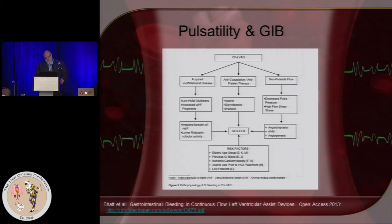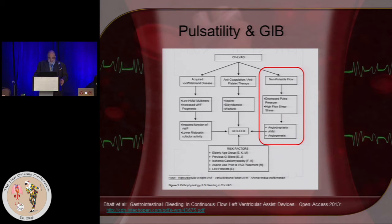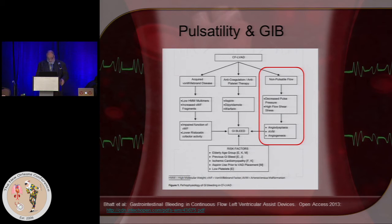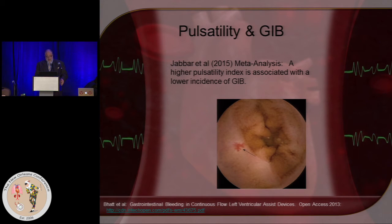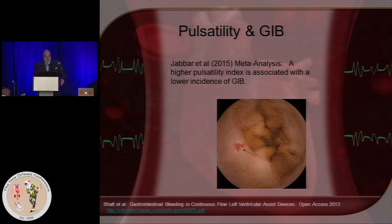The causes of GI bleeding include on the non-pulsatile flow side: decreased pulse pressure, high flow shear stress, angiodysplasia, AV malformations, and angiogenesis. In combination with other factors — all LVAD patients have acquired von Willebrand's disease and are on some degree of anticoagulation — they're prone to bleeding, and it's one of the major reasons for readmission of LVAD patients. In a meta-analysis by Jabbar et al., they found that a higher PI on the LVAD — a reflection of pulsatility — is associated with a lower incidence of GI bleeding.